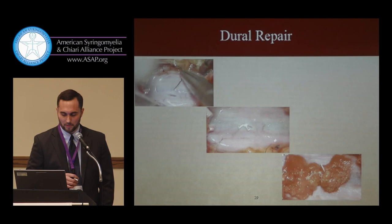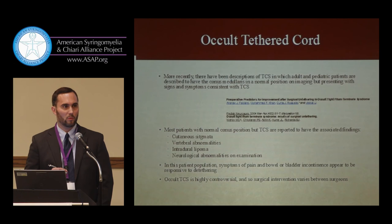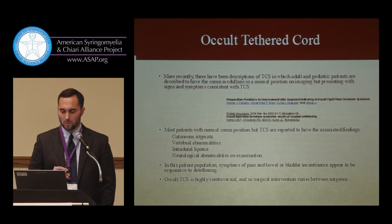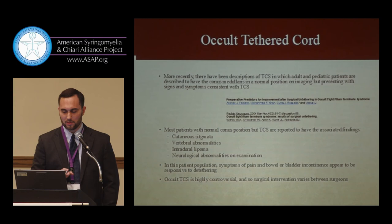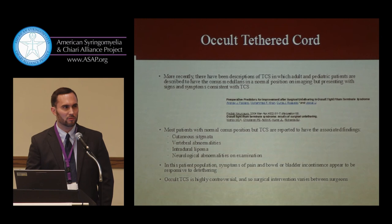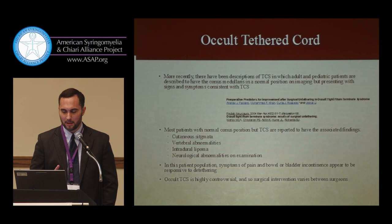One controversial area is the idea of occult tethered cord syndrome. There have been some descriptions of tethered cord in adults and kids where the conus is at a normal position on MRI. Most of these patients have some sort of associated abnormality if you look hard enough on examination or MRI. In this population, symptoms of pain and bowel and bladder incontinence appear to be responsive to de-tethering. However, it's a rare entity and highly controversial, so surgical intervention varies between surgeons.